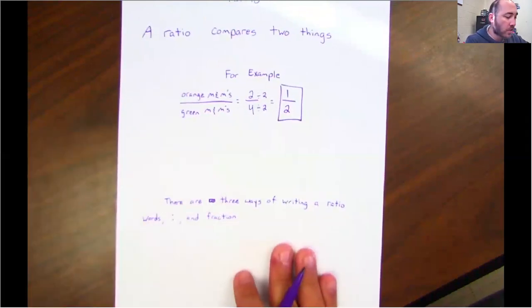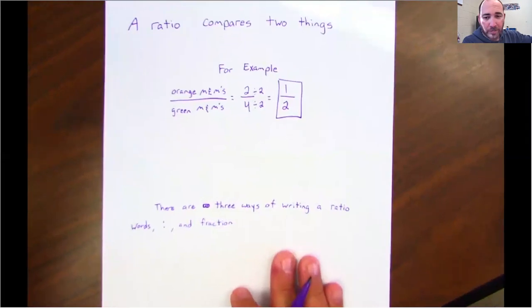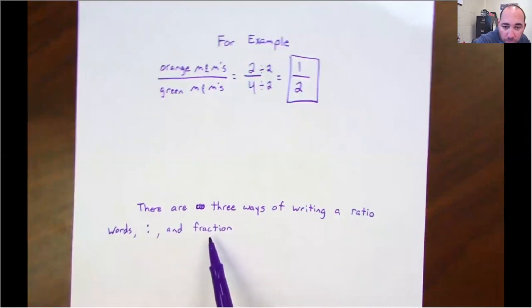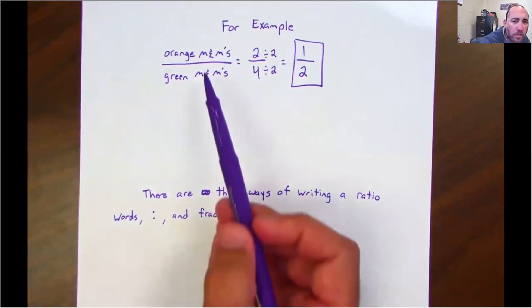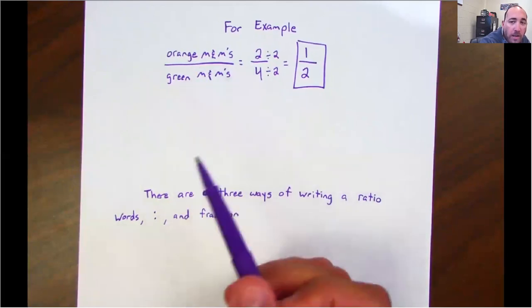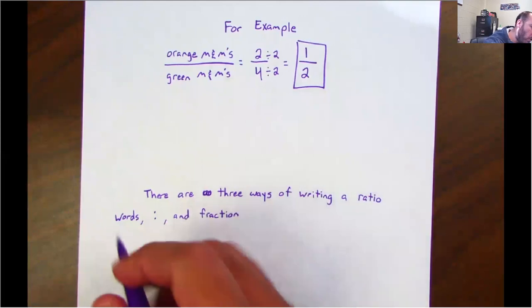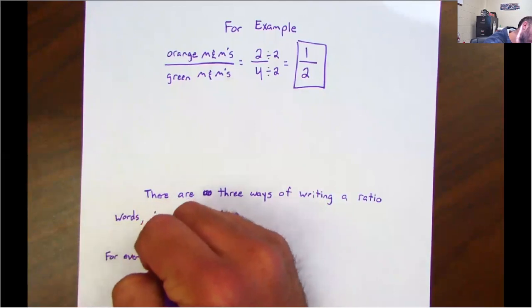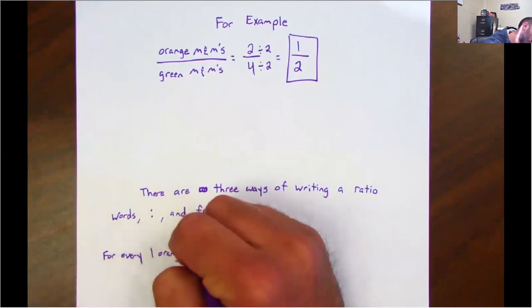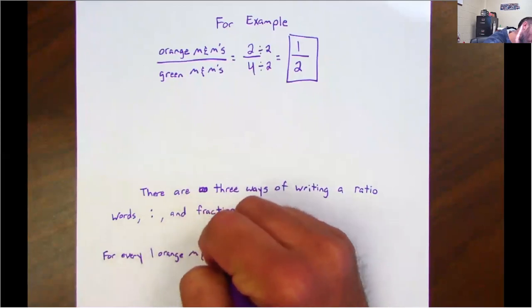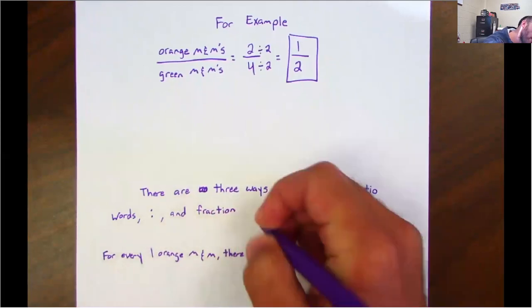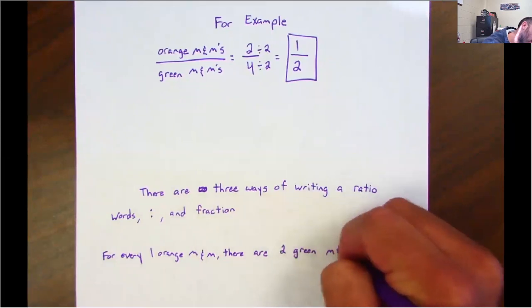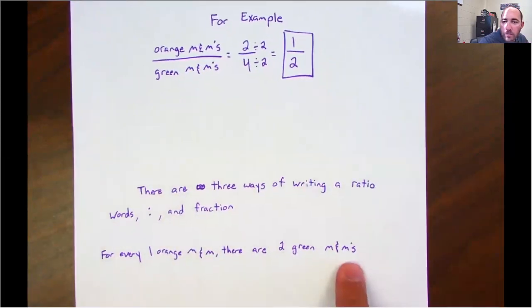So here we go. There's three ways of writing a ratio. We can do it in words. We can do it with a colon, or we can do it as a fraction. So let's go with orange to green M&Ms again in words. After we simplified it down, for every one orange M&M, there are two green M&Ms. There's your answer in words.